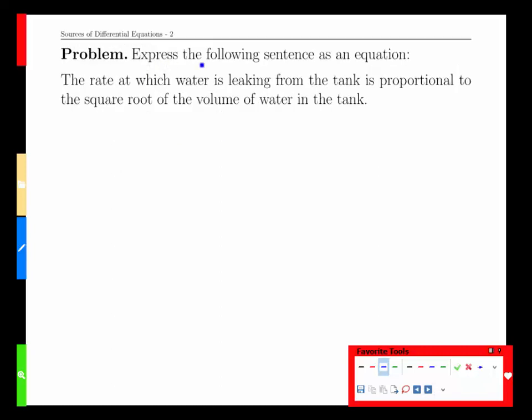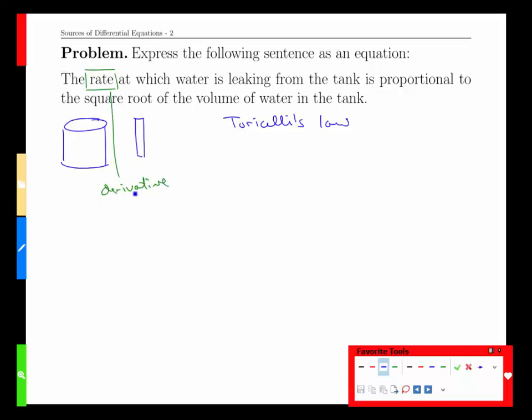We can see some quick examples of this. If we look at the rate at which water is leaking from a tank, or another example would be a burette in chemistry class. It turns out, if you look at the physics of it, the pressure and gravity, all those kinds of elements, you end up arriving at Torricelli's law, which says that the rate at which water is leaking from a tank is proportional to the square root of volume of water in the tank. Now the key thing here is the rate. As soon as we see something about a rate, we're talking about a derivative.